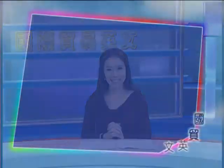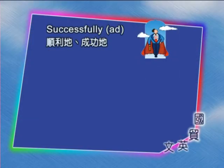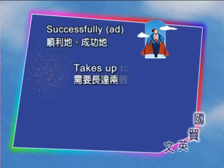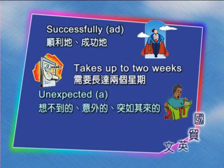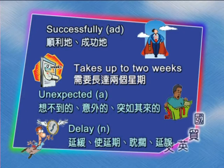我们来看一下这封信件里面的几个单字。Successfully——胜利的、成功的；Takes up to two weeks——需要长达两个星期；Unexpected——想不到的、意外的、或者是突如其来的；Delay——延缓、使延期、耽搁或延误。